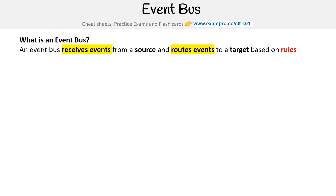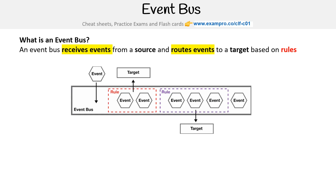An event bus receives events from a source and routes events to a target based on rules. So we have an event, it enters the event bus, and rules tell it to go to the target — it's that simple. We've been seeing event buses in other things like streaming and pub/sub.